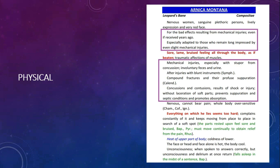Second example of physical cause: written in Arnica Montana, in violet color box — for the bad effects resulting from mechanical injuries, even if received years ago. Especially adapted to those who remain long impressed by even slight mechanical injuries, and mechanical injuries especially with stupor from concussion, involuntary feces and urine. After injuries with blunt instruments, also present in Symphytum. Compound fractures and their profuse suppuration, also present in Calendula. Concussions and contusions, results of shock or injury without laceration of soft parts — to prevent suppression and septic conditions and promote absorption.